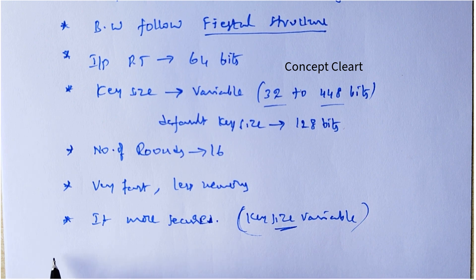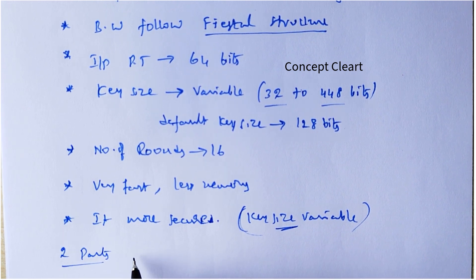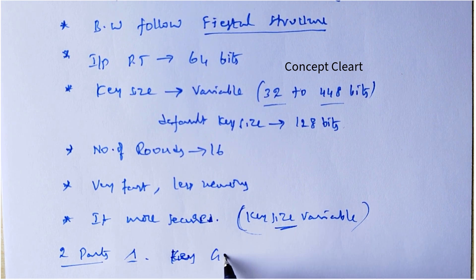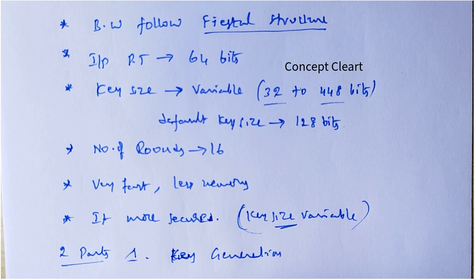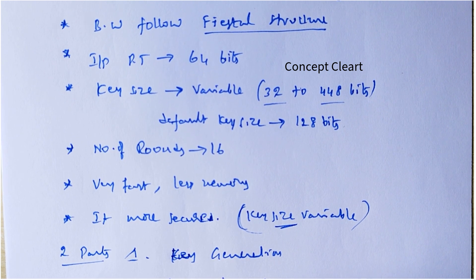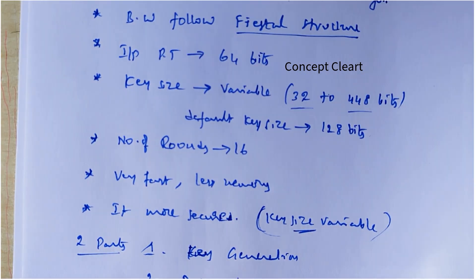The Blowfish algorithm contains two parts. The first one is key generation and the second one is data encryption. We will see both one by one — what is key generation and what is data encryption.